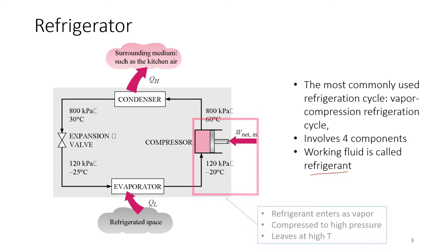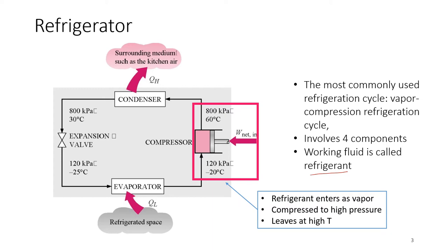Let's start at the compressor. You've learned about compressors in chapter 5 — the compressor needs electricity to operate, it needs power. So we have work input. You have to supply some electricity for it to start working. What it does is it compresses the substance to higher pressure and higher temperature. The refrigerant enters at 120 kPa and minus 20 degrees Celsius in vapor state, and it is compressed in the compressor to 800 kPa and 60 degrees.